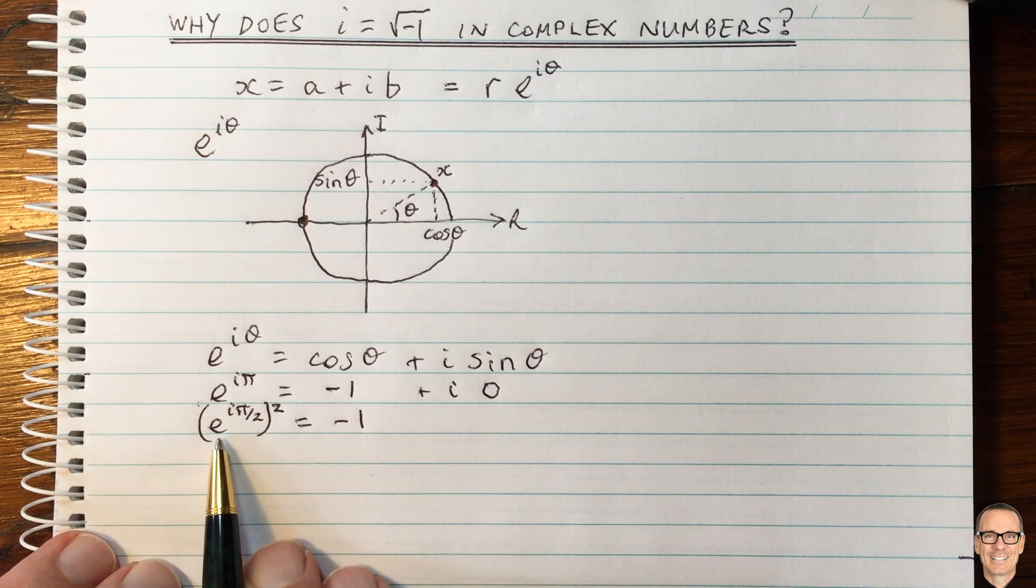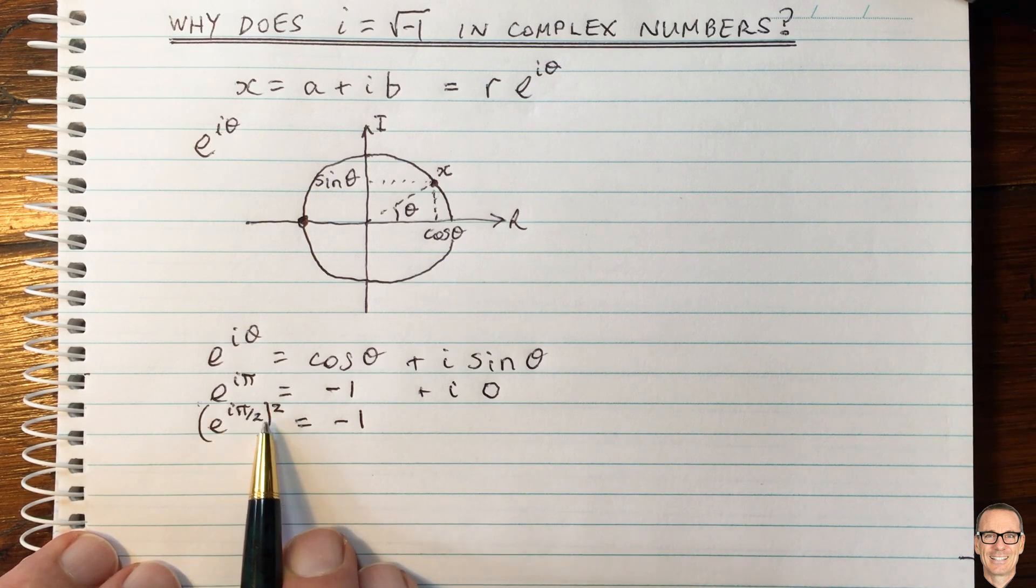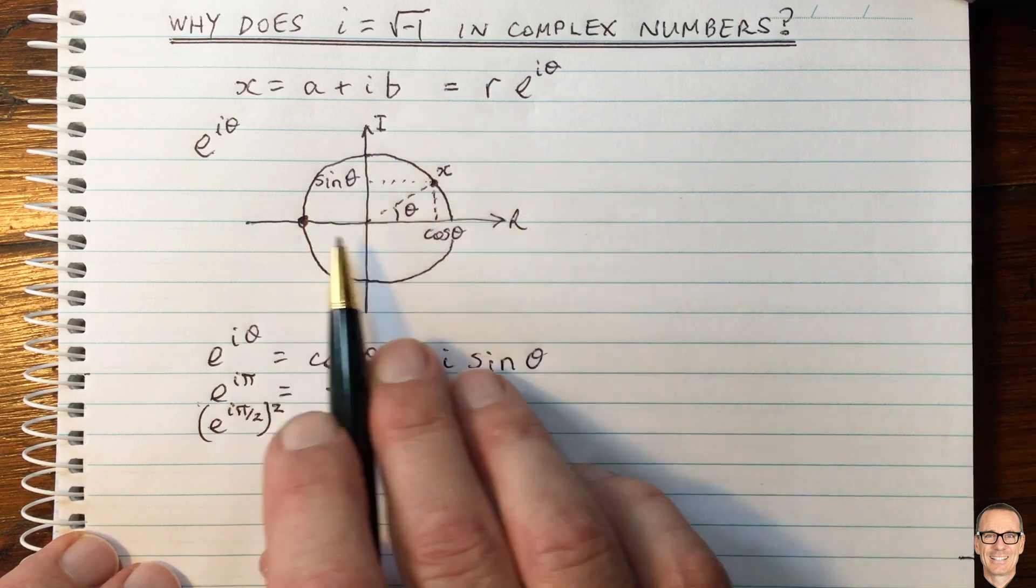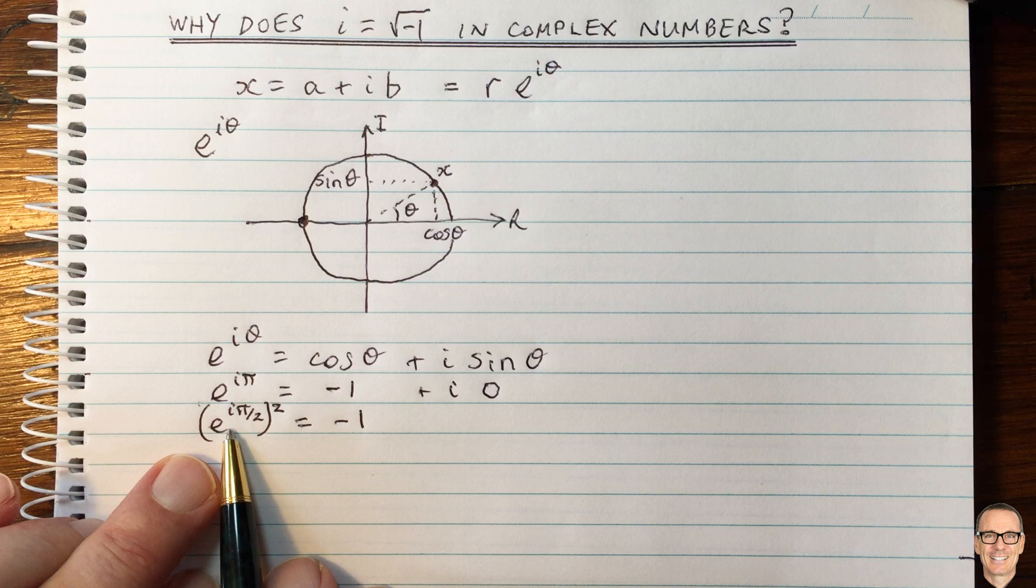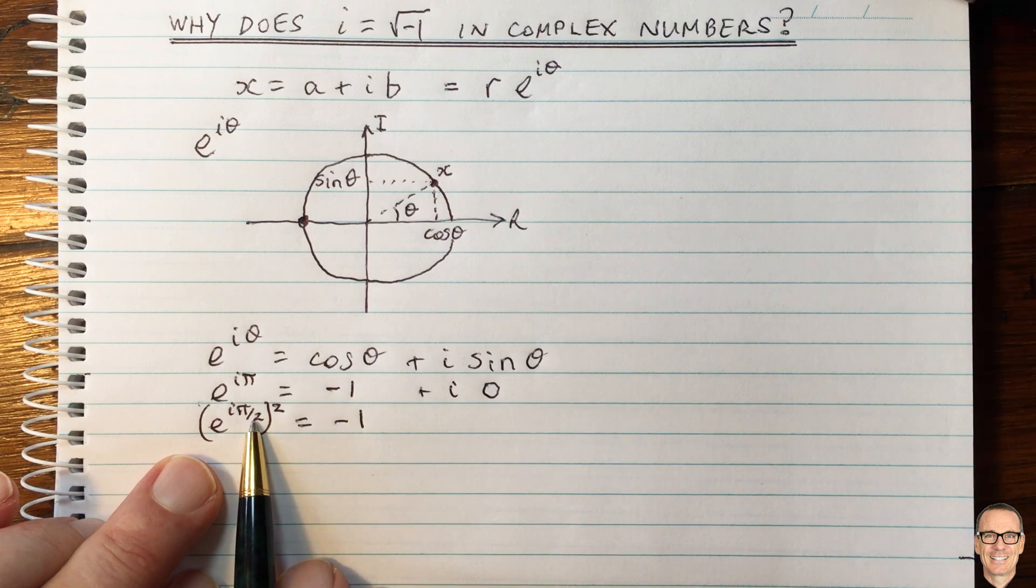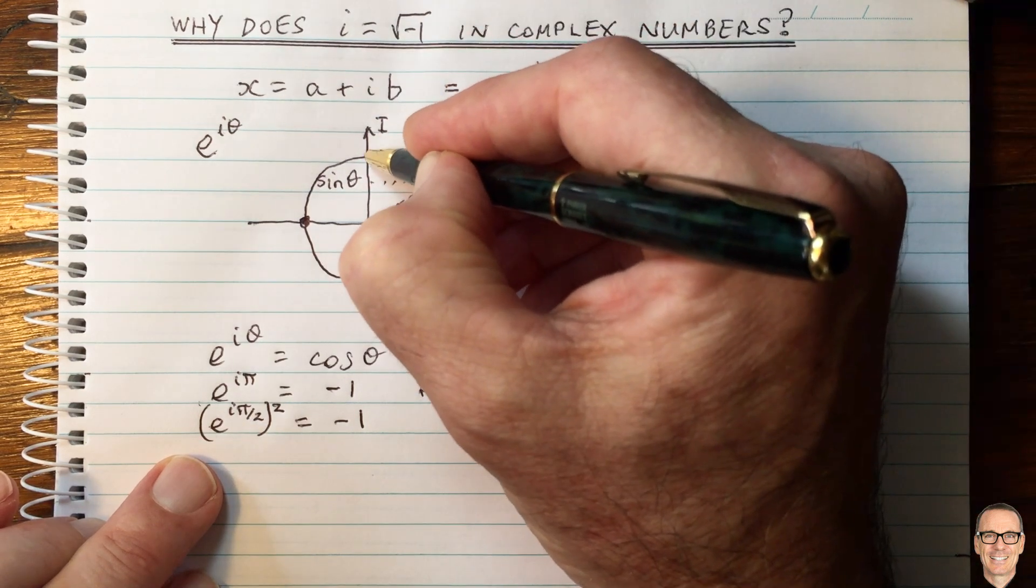So now what we have in here is e to the i pi on 2. Now, where is that on our circle? Well, that is a number inside the brackets here, is a number, complex number, which is at the angle pi on 2. That's the value up here.